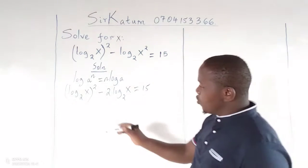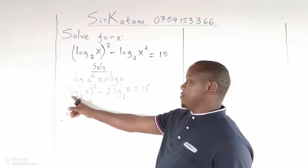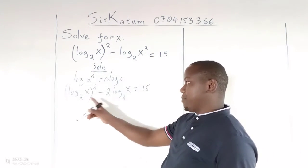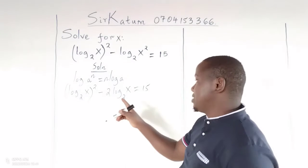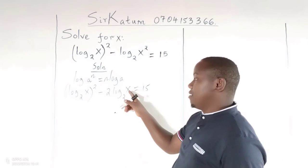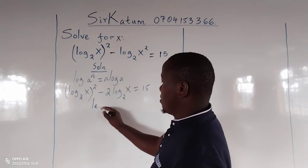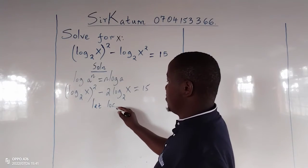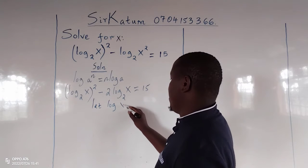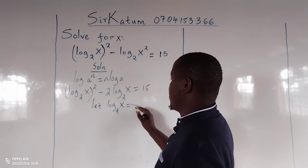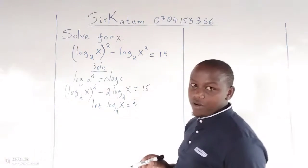Then after this, we can see the logarithm of x to base 2 is appearing several times. We also have logarithm of x to base 2. Therefore, we can let the logarithm of x to base 2 be another variable, say t.